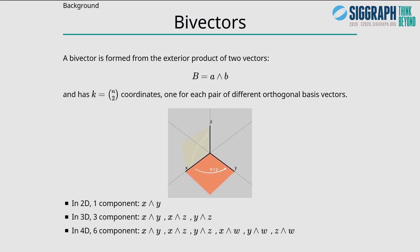A bi-vector is formed from the exterior product of two vectors, and it has n choose two coordinates, one for each pair of different orthogonal basis vectors. In 2D you only have one plane, the xy plane. In 3D you have the xy, xz, and yz planes as shown here. And in 4D there are three more planes that involve the w-axis, which gives six planes total.